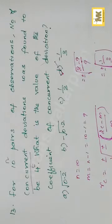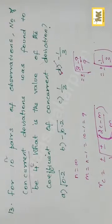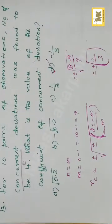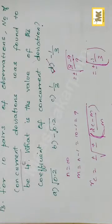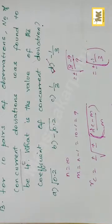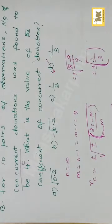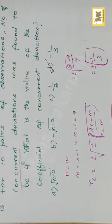In the formula, the coefficient of concurrent deviation rc is equal to plus or minus root of (2c minus m) divided by m. We have 10 pairs, so n is equal to 10, and m is equal to n minus 1, so m is 9.